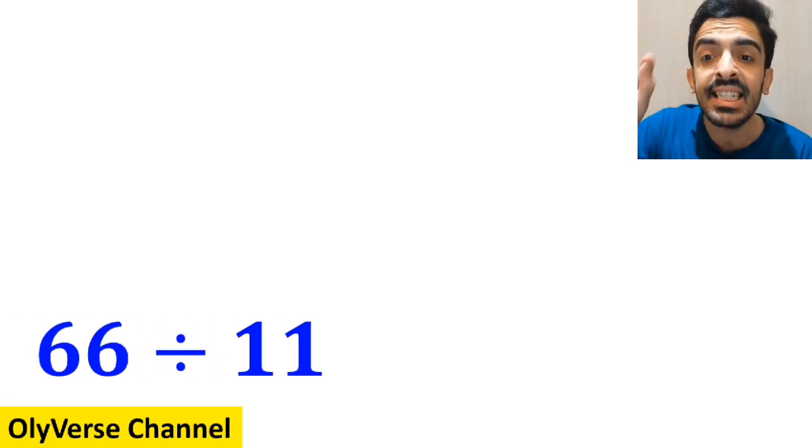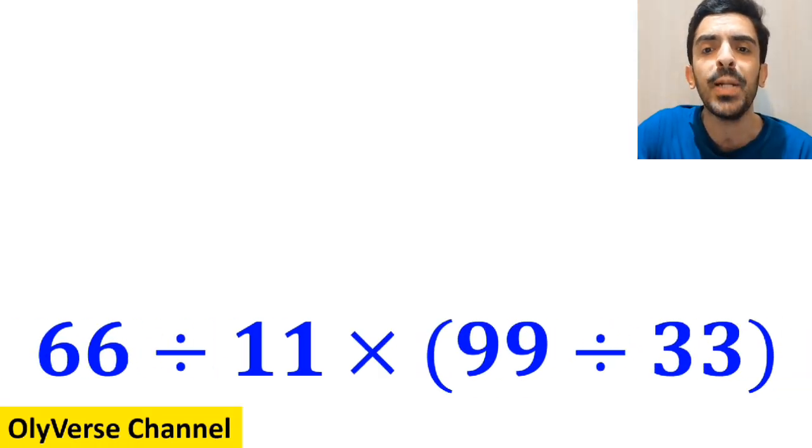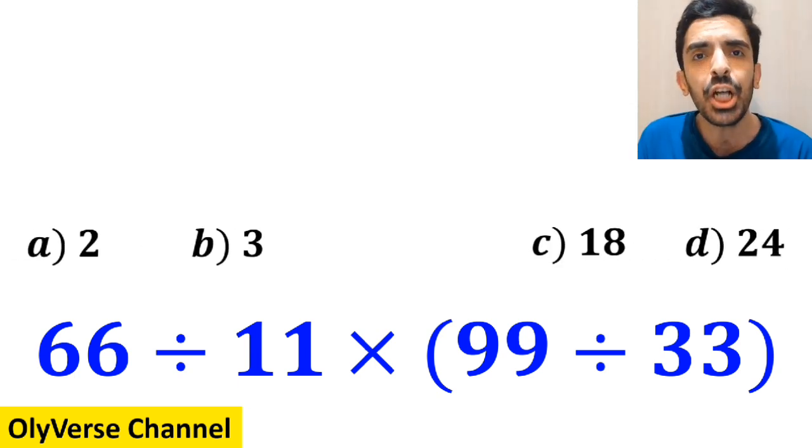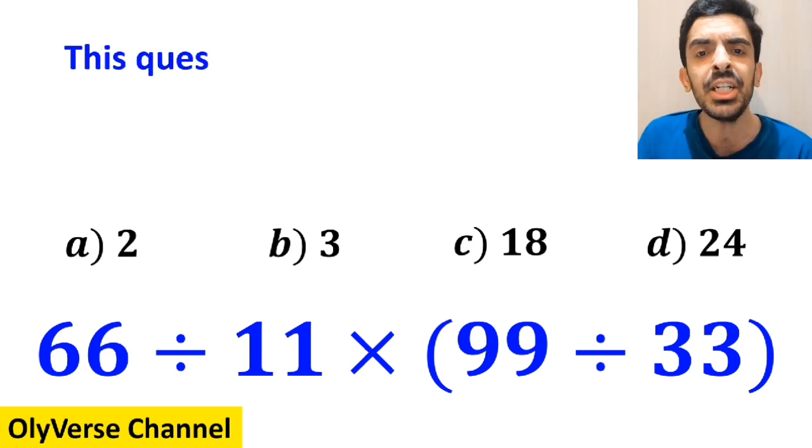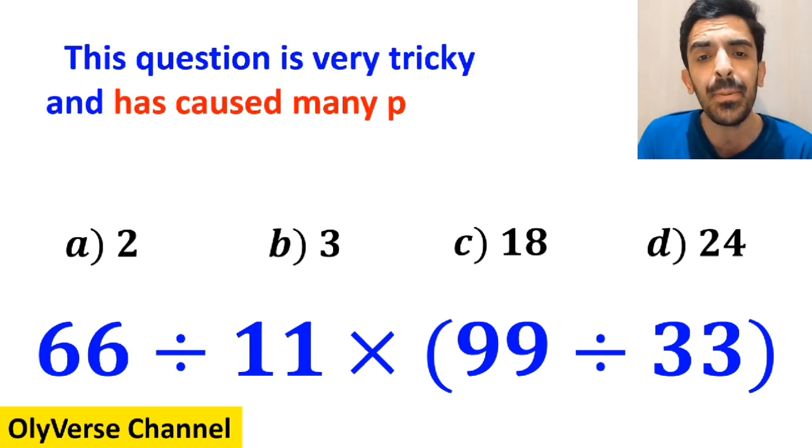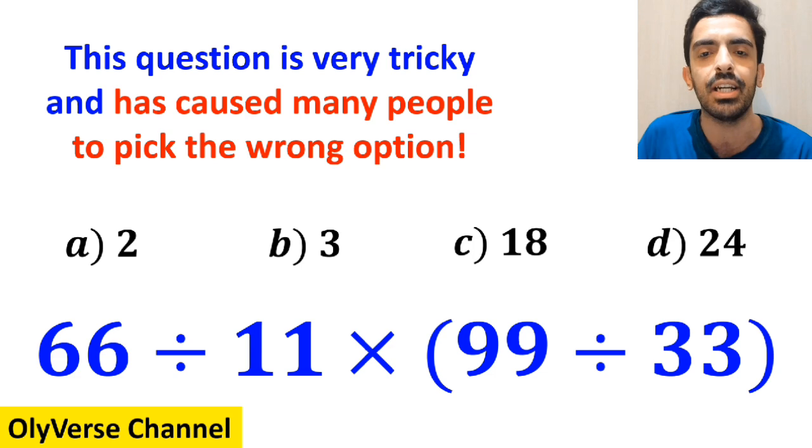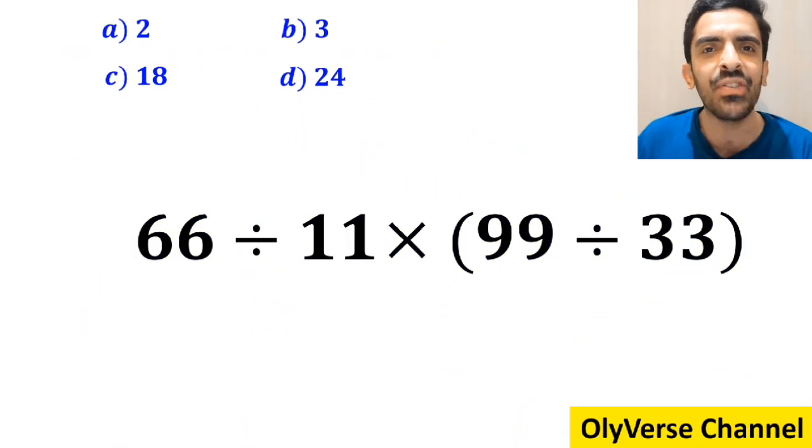What is the value of the expression 66 divided by 11 multiplied by open parenthesis, 99 divided by 33 closed parenthesis? Which option do you think is the correct answer to this question? This expression is very tricky and has caused many people to pick the wrong option. Let's go and solve it together.